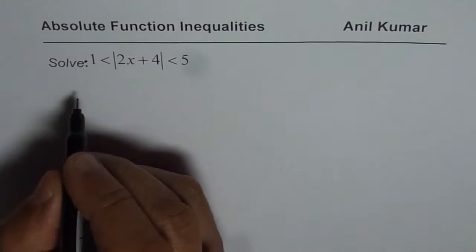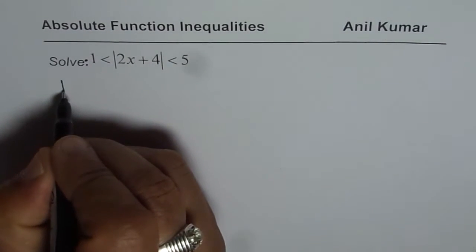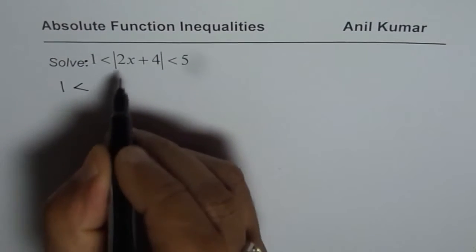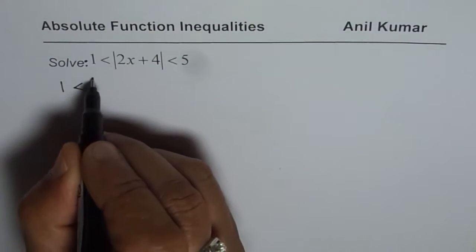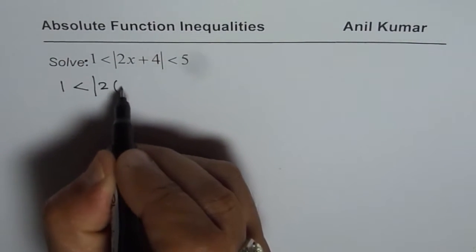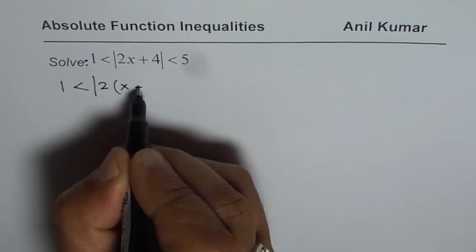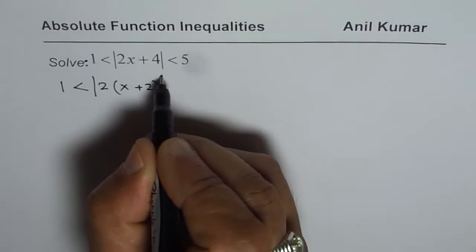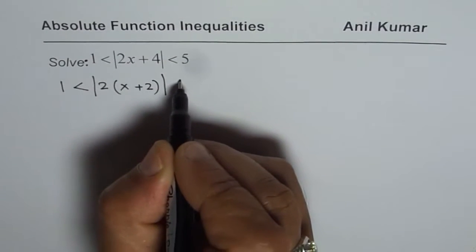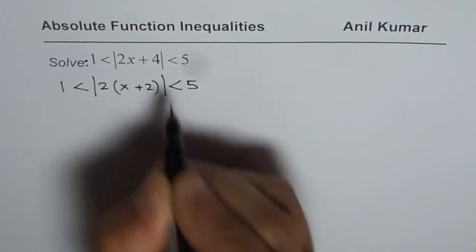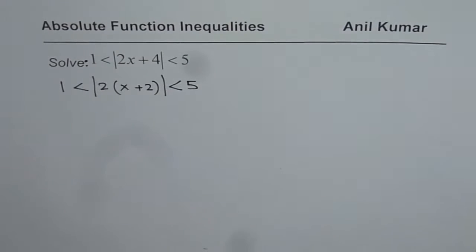Now let's rewrite this question. We are saying that the absolute function — let me take 2 as a common factor — so we get 2 times the absolute value of x plus 2 in brackets, and that is between 1 and 5. So that becomes the equation for us.